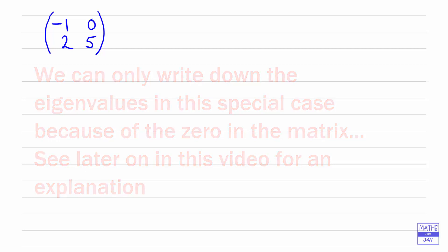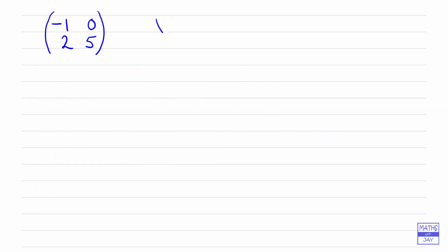So let's use lambda 1 for one of the eigenvalues and that's minus 1, and lambda 2 for the other eigenvalue and that's 5. You can see that the two eigenvalues here are the elements on the main diagonal — the leading diagonal — and so what we'll do next is calculate an eigenvector for each of the eigenvalues.